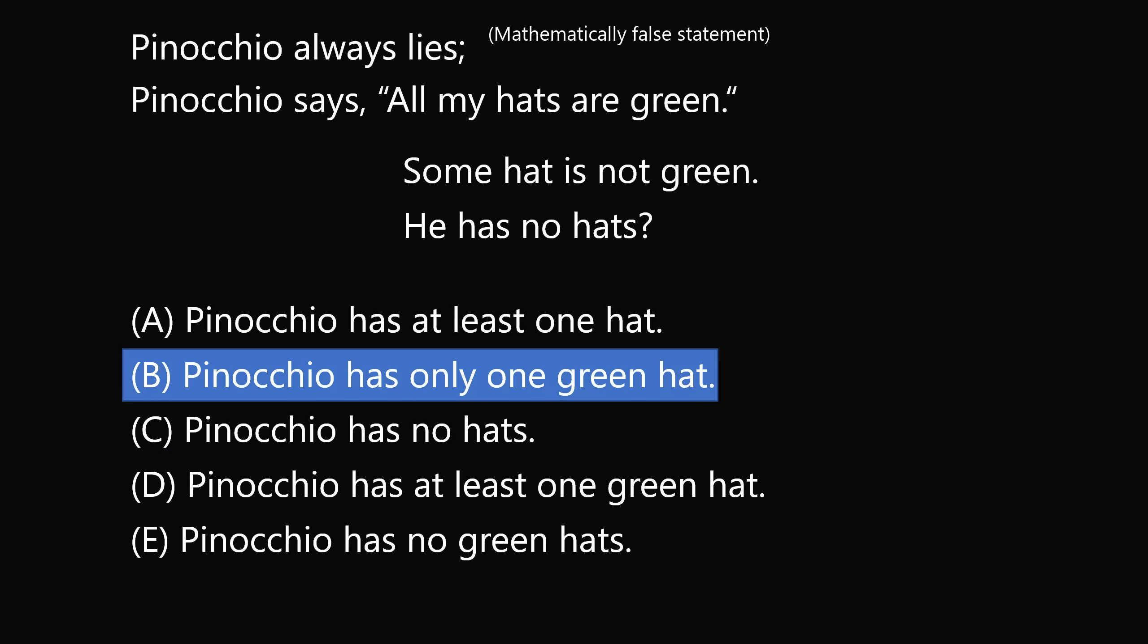So we'll leave these answer choices and then let's consider each of the other ones for completeness. Answer choice B: Pinocchio has only one green hat. Is this always true? Imagine Pinocchio has two green hats and one blue hat. In that case, he could say all my hats are green, and he would be lying. So just from this information, we cannot conclude that Pinocchio has only one green hat. So we'll eliminate answer choice B.